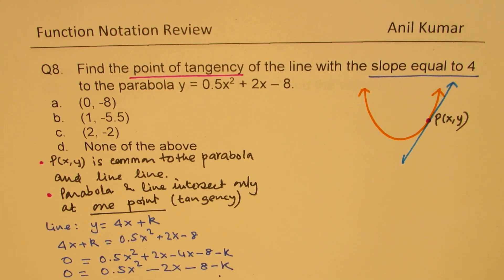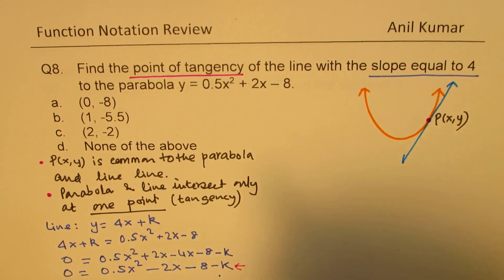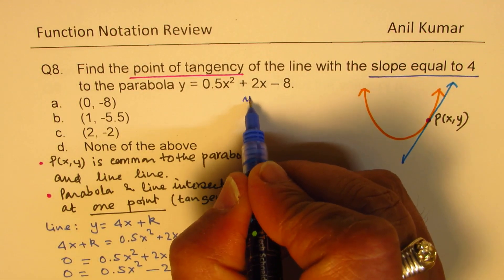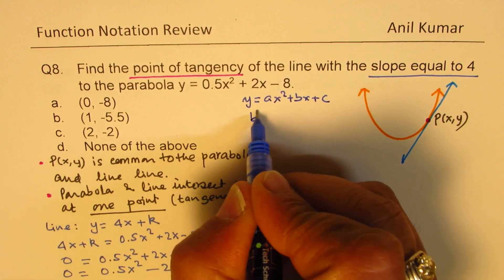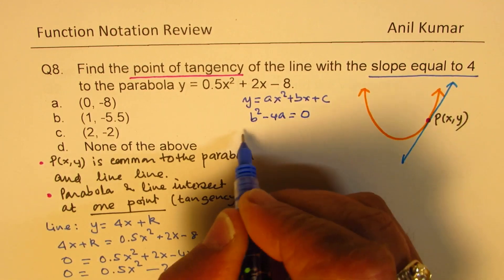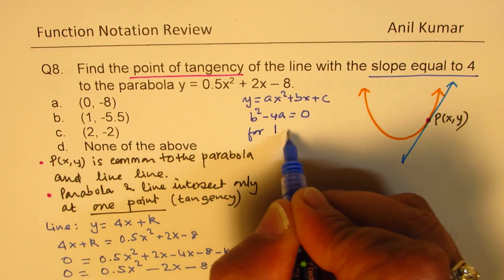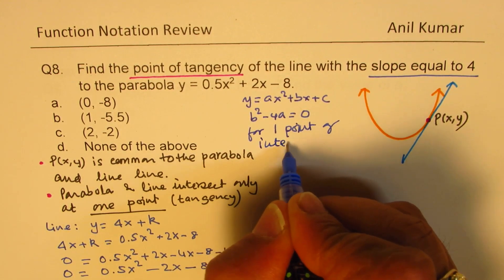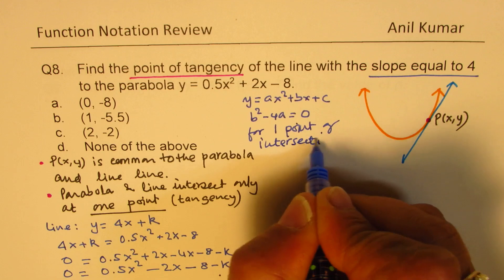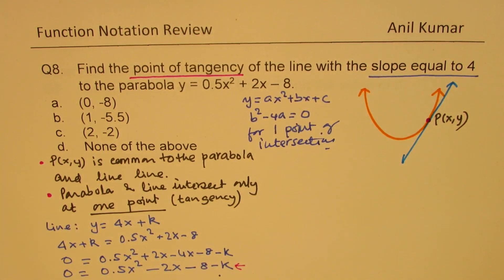So that becomes our quadratic equation to solve. How do we find k? We'll use our strategy, which is that the line intersects only at one point. Let's recall that if you have y = ax² + bx + c, then b² - 4ac should be equal to 0 for one point of intersection, or the condition for tangency.